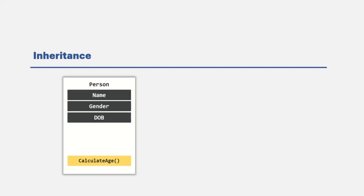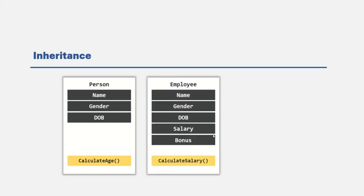Let's say we have a class called Person, and this Person class has a name property, a gender property, and a date of birth property. It also has a method called calculateAge, which will calculate the age of the person based on his date of birth. We also want to create a class called Employee. This Employee class is also going to have name, gender, and date of birth properties, along with a salary property, a bonus property, a calculateSalary property, and the calculateAge method as well.